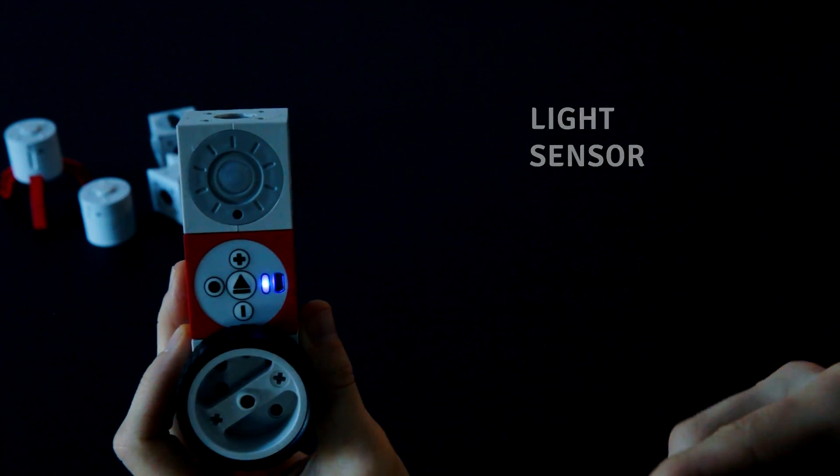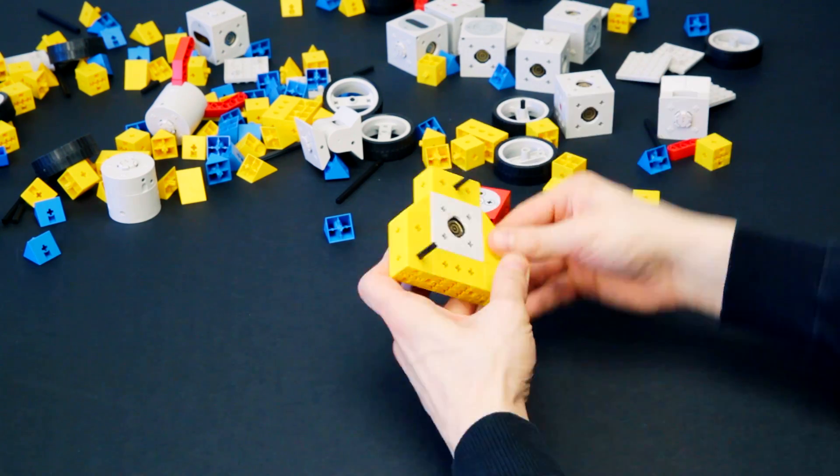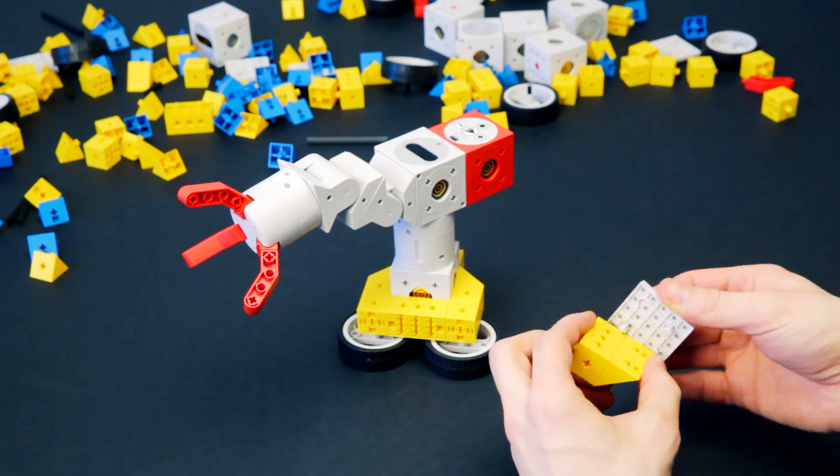And then there are the QBs, our passive building bricks. These come in different shapes and colours. Use them to add more details to your robots.